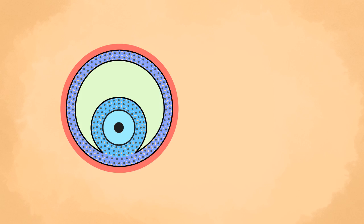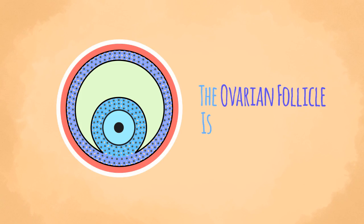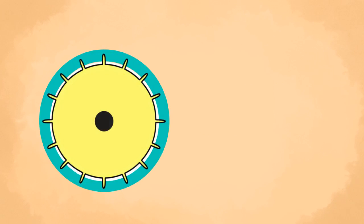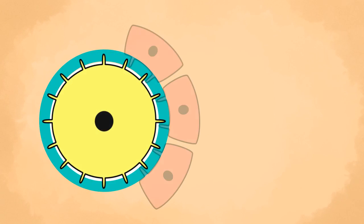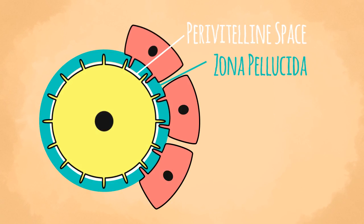The cells of the theca interna later secrete a hormone called estrogen and are then called the cells of the thecal gland. Outside the theca interna, some fibrous tissue becomes condensed to form another covering called the theca externa. The ovarian follicle is now fully formed.